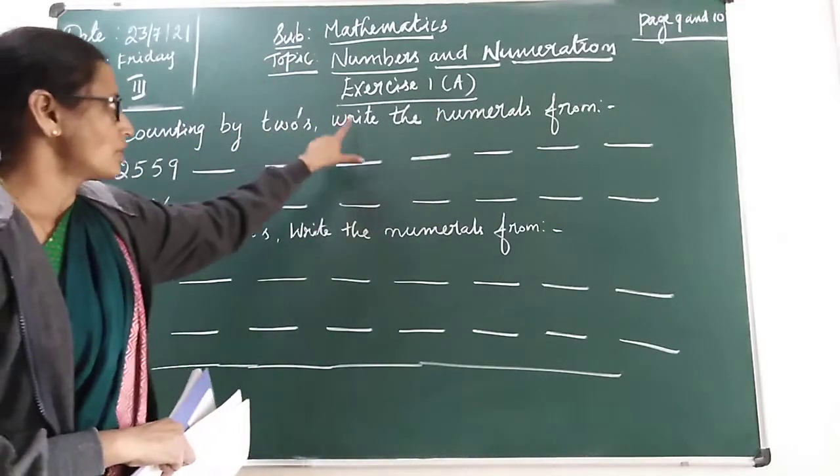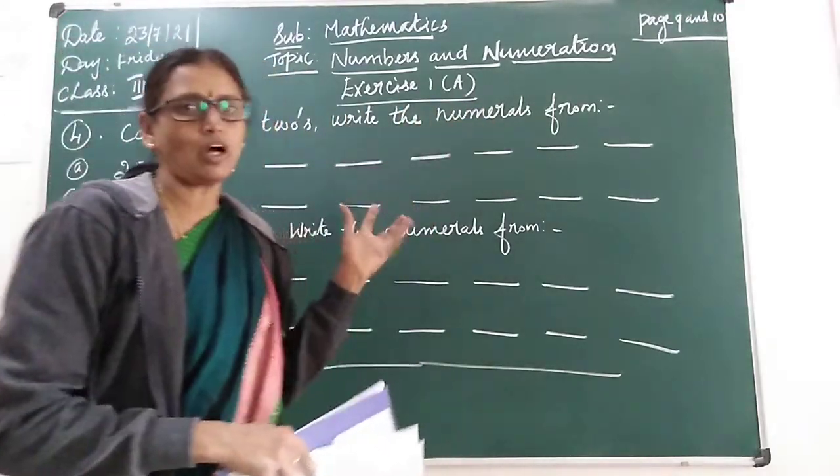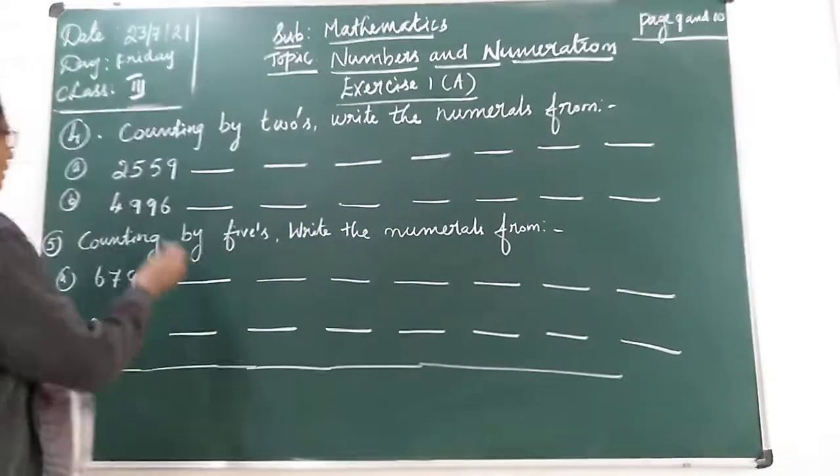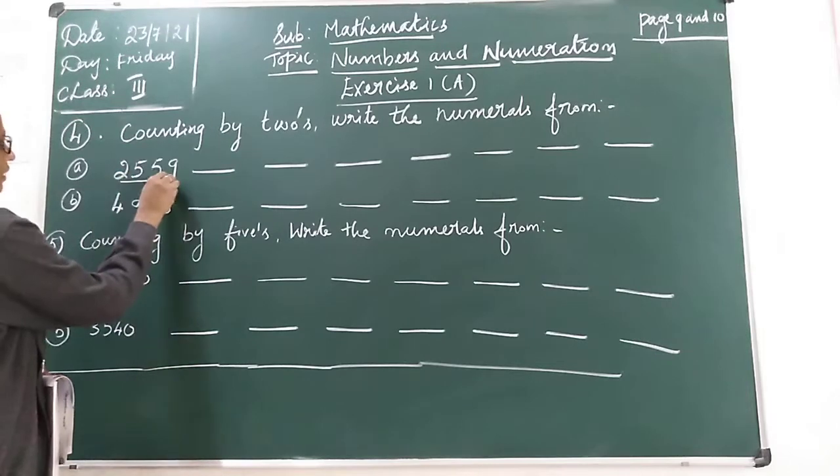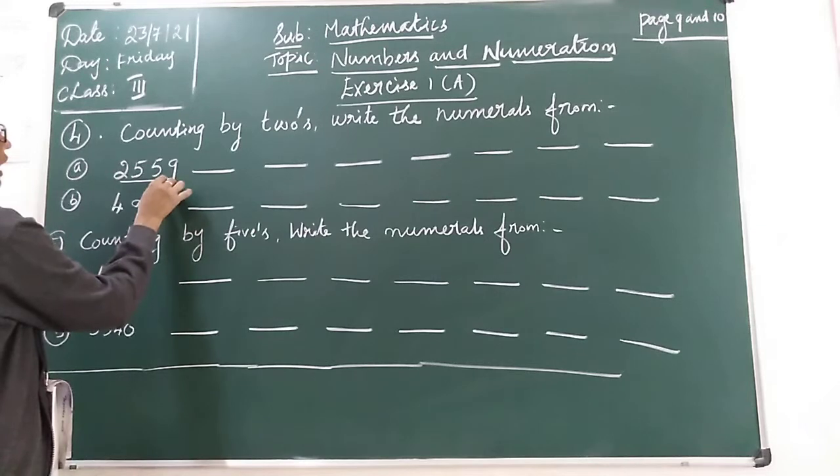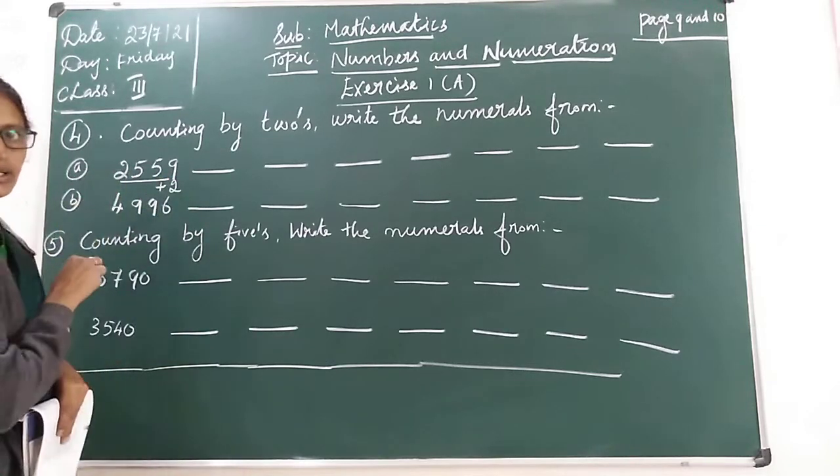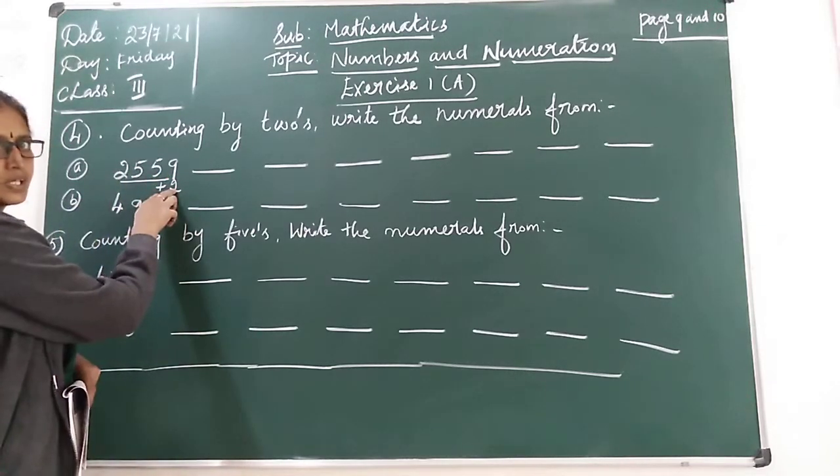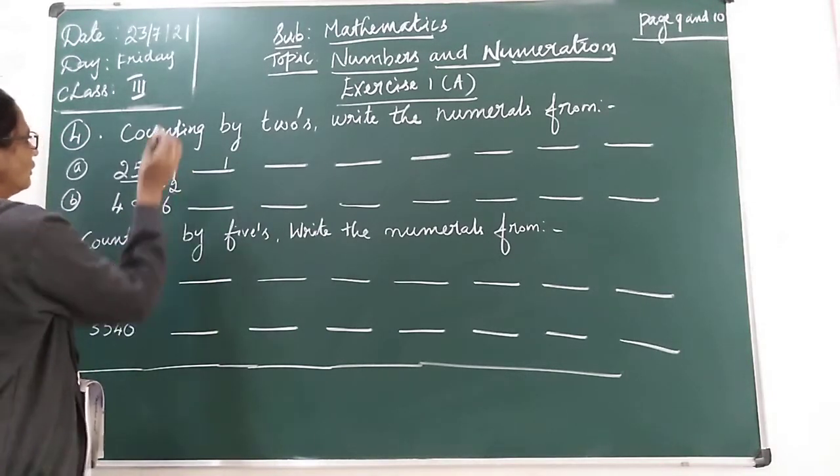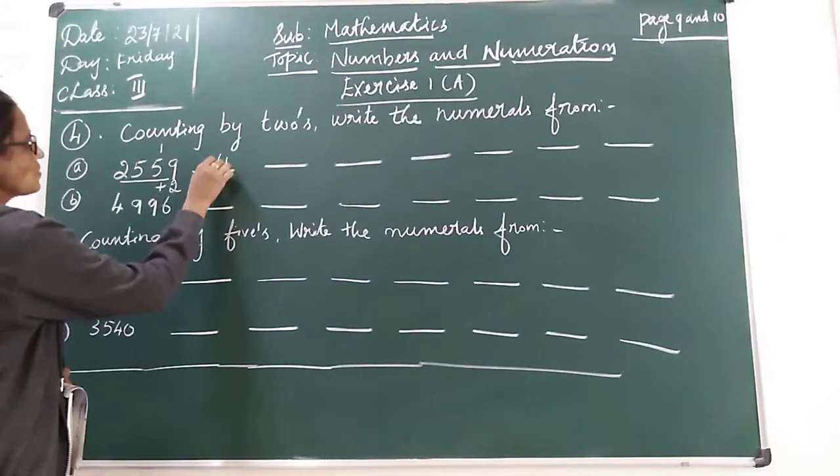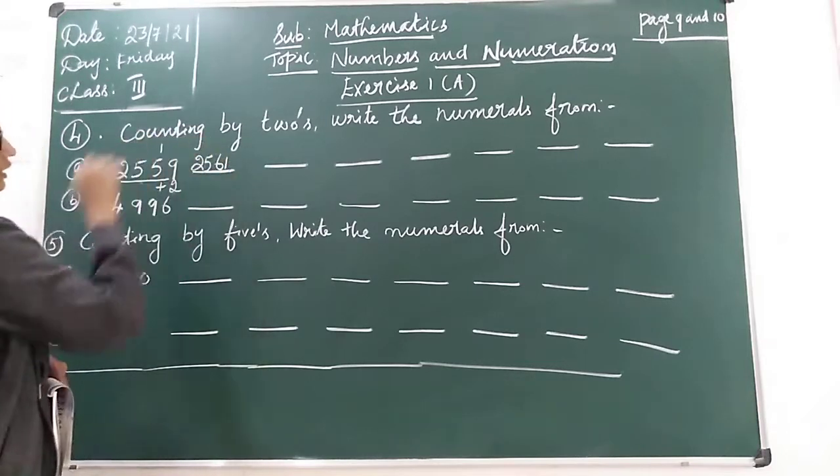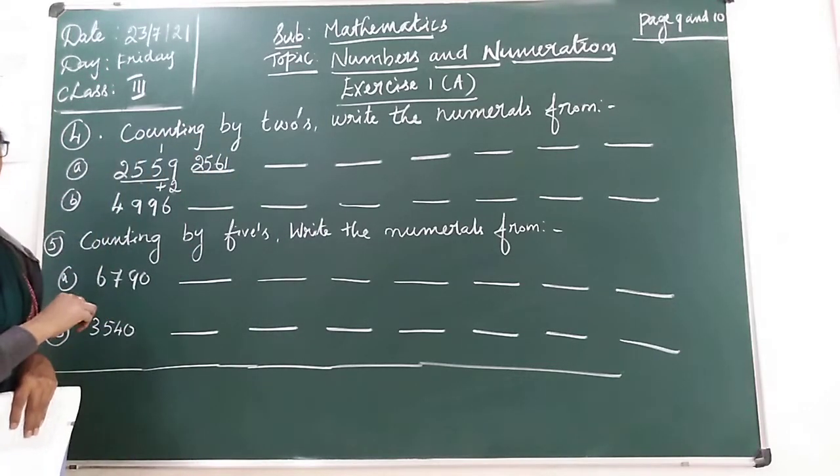Counting by twos, write the numerals from. We have to count two and we have to write the next number children. Here the given number is 2559. Count by twos, that means the order and two children. So 9 plus 2 is 11. One carry over. 5 plus 1 is 6. The remaining number is? So the next number is 2561.